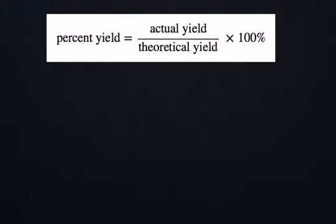So actual yield divided by theoretical yield times 100%. The actual yield is how much you actually produced of a chemical. In this case, we're dealing with chalk. So how much did you actually produce or get or collect in your filter paper?